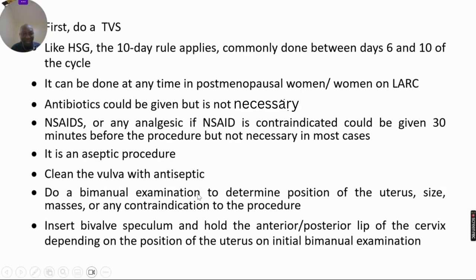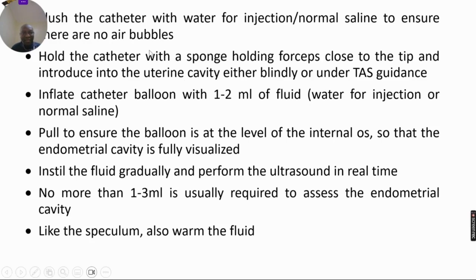The perineum is cleaned. A bimanual examination is done to determine the position, size, whether there are masses, or whether there are contraindications for the procedure. The bimanual speculum is inserted and either the anterior or posterior lip of the cervix is held depending on the position of the uterus. The catheter is flushed with water for injection or normal saline to ensure there are no air bubbles. The catheter is introduced into the uterine cavity, either blindly or preferably under trans-abdominal scan guidance.